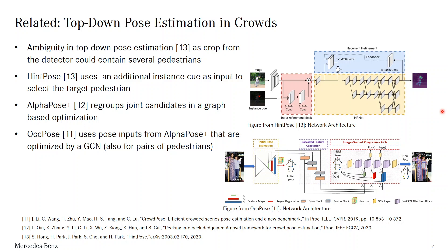We compare our approach to AlphaPose Plus, which is also a specialized method for pose estimation in crowds. They first estimate all joints for each detected object and then run a graph-based optimization in a post-processing step to reassign joint points. OCPose is a very recent method that depends on poses from AlphaPose Plus as input. It uses a graph convolutional neural network to optimize these poses, which also happens jointly for pairs of pedestrians. We suggest that by improving pose performance in comparison with AlphaPose Plus, OCPose could also profit from our method.